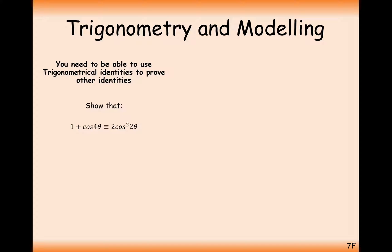Next question: 1 + cos4θ = 2cos²2θ. Start with the more difficult side. I want to use the cos double angle rule to get down from 4θ to 2θ, so I'll start with the left-hand side. The identity cos2θ = 2cos²θ − 1 isn't quite what I'm looking for — I'd ideally have cos4θ. So instead of halving the angles, I'm going to double both angles in this identity, giving cos4θ ≡ 2cos²2θ − 1.